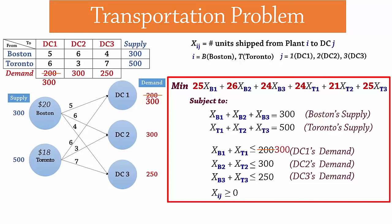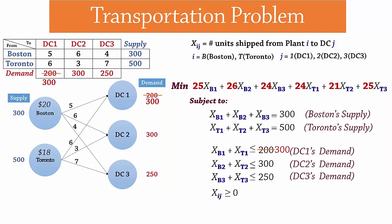Now suppose for some reason, we are not allowed to ship from Toronto to Distribution Center 3. Maybe because the cost is too high or the destination is too far. One way to address that is to simply remove XT3 from the model. But if your model has too many variables and you don't want to be looking for XT3 all over the place, a better way is to add another constraint to the model that states that XT3 equals 0.